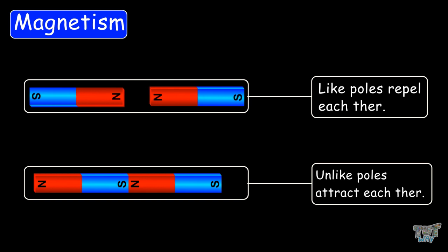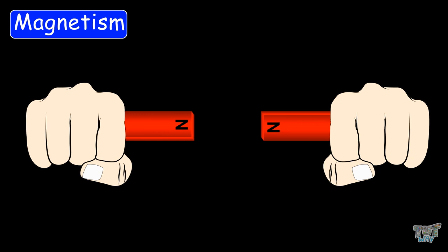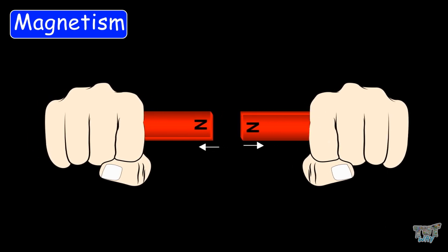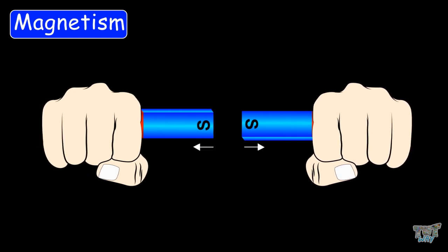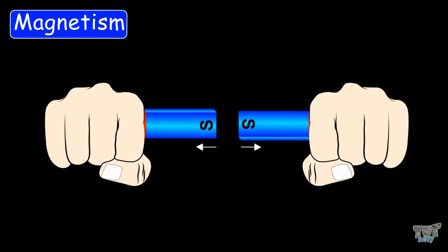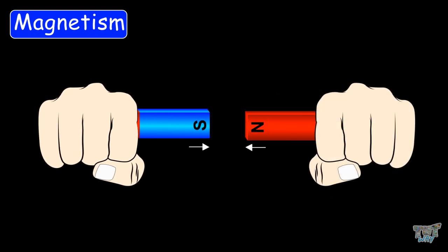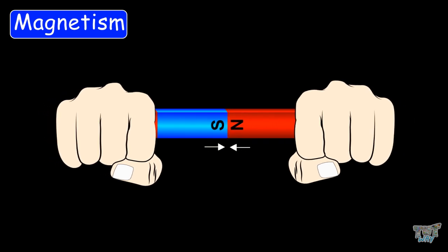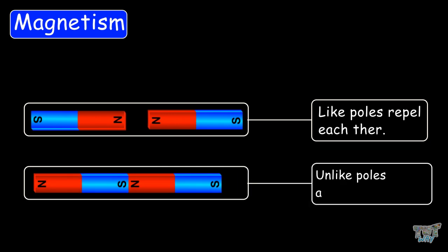Let us perform an experiment to see what happens when you bring two magnets close to each other. Take two magnets and hold the bars with their like poles facing each other. Try to bring the north pole of one bar magnet near the north pole of the other — you will experience a repulsive force. Then try to bring the south pole of one bar magnet near the south pole of the other — again, you will experience a repulsive force. Now flip one of the magnets lengthwise so that unlike poles face each other; in this case you will experience the attractive force. So we conclude that like poles repel and unlike poles attract each other.